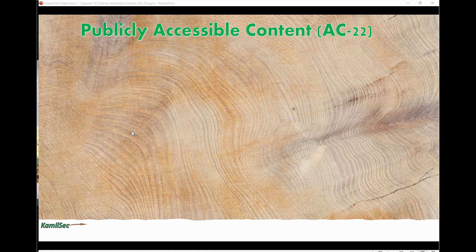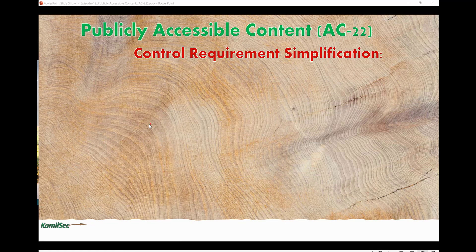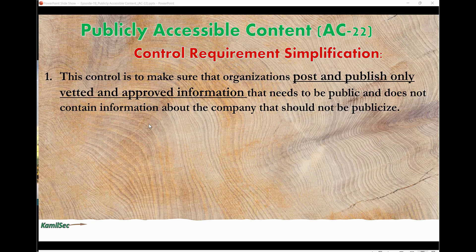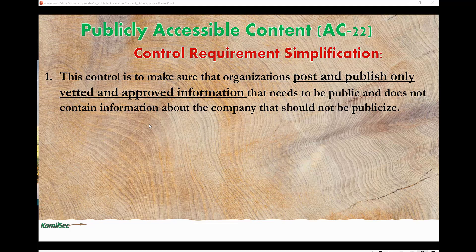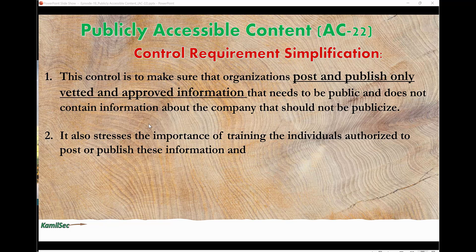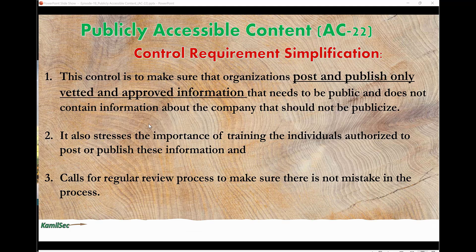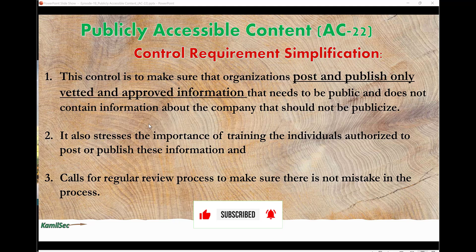Now let's look at the control requirement simplification. This control is to make sure that organizations post and publish only vetted and approved information that needs to be public and does not contain information that should not be publicized. It also stresses the importance of training the individuals authorized to post or make this information public, and calls for a regular review process to ensure there are no mistakes — like somebody mistakenly publishing information that is not supposed to be public. Even if information is already posted, a regular review of publicly available content can catch things that should not be public.